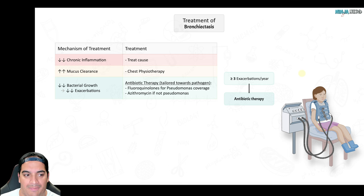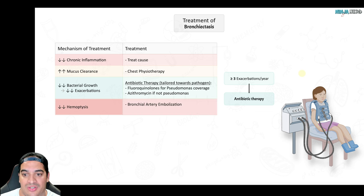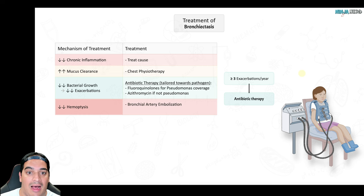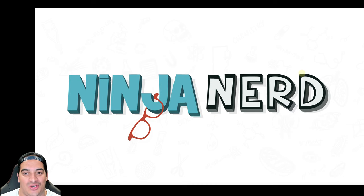Finally, reducing the risk of hemoptysis is important. These patients may require bronchial artery embolization at some point in their life, and if they have recurrent hemoptysis events it may even require surgical resection of the diseased lung segments. That covers bronchiectasis — I hope it made sense and you guys enjoyed it.